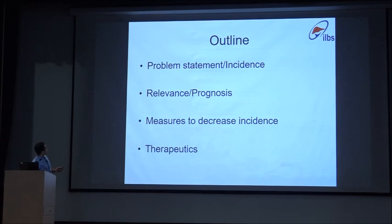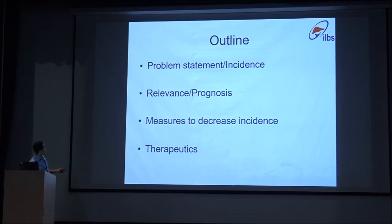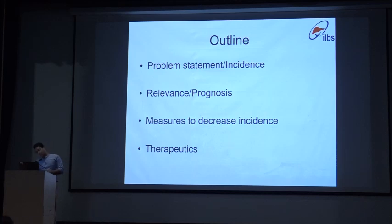This would be my outline. I will start with the basic incidence, what is the prognostic value, the relevance of this indeterminate ALF, what can you do to decrease its incidence, and what is the underlying pathophysiology and therapeutics if you are able to ascertain that.